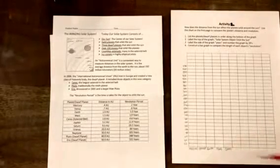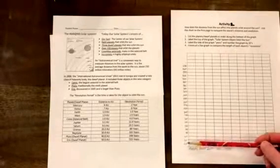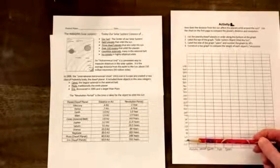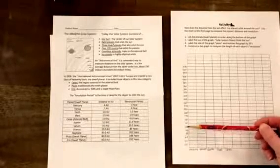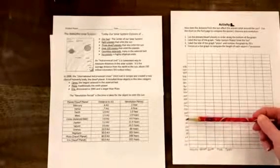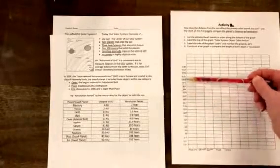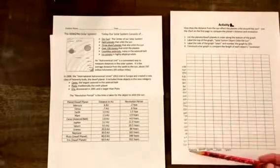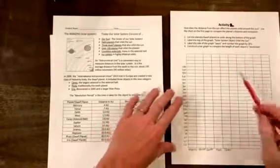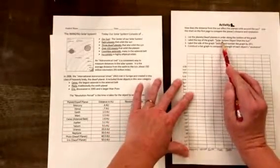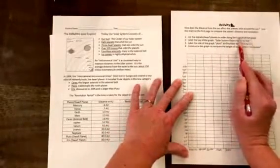And then going up this way, on each line you're going to put in 20, so increments of 20. You're going to go all the way up and label up to the top in increments of 20. And then it says label the top of the graph. It actually gave you the title of the graph, oh my goodness, so easy.